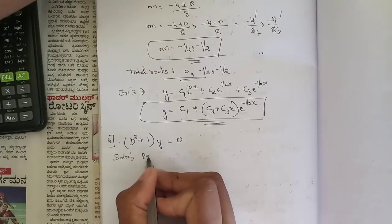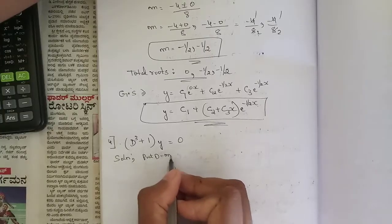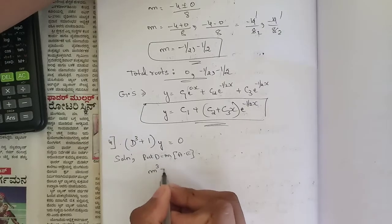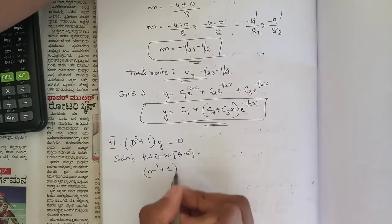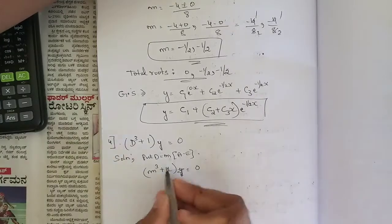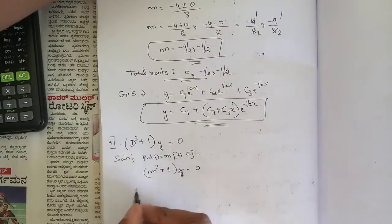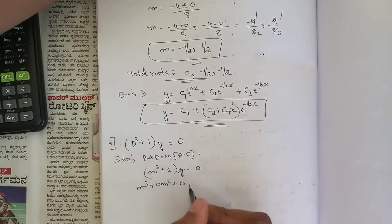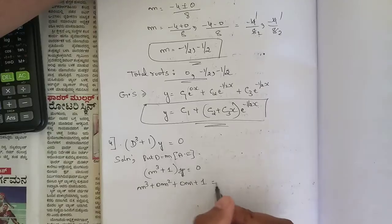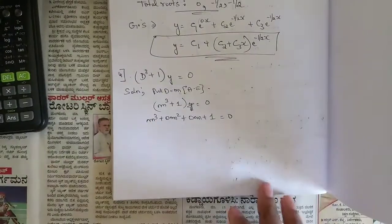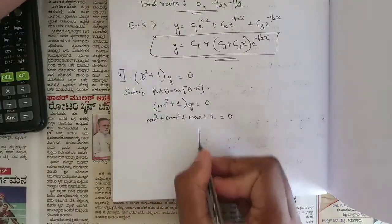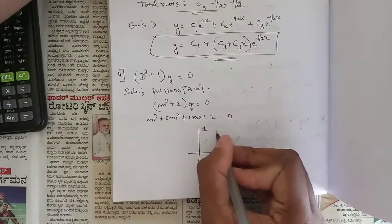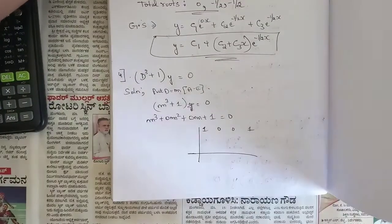To solve this, first we need to put D equal to m according to the auxiliary equation. That is, m³ + 1 = 0. Some terms are missing, so as a complete polynomial it is m³ + 0m² + 0m + 1 = 0. Now it is a complete cubic polynomial. For a cubic polynomial, we apply synthetic division. Consider the coefficients: 1, 0, 0, and 1.